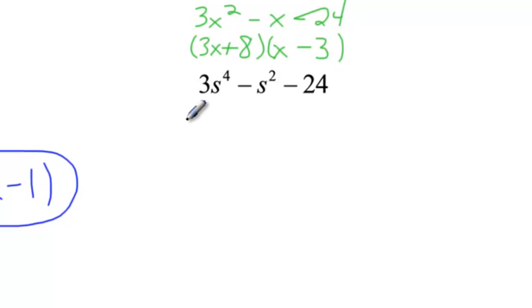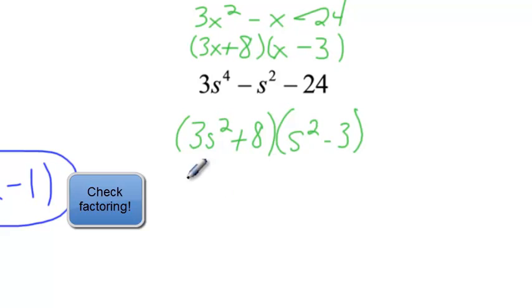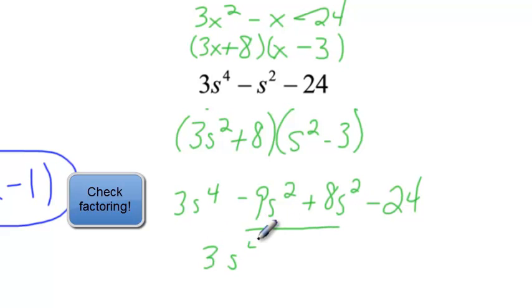And we're going to say, all right, well, that works. Well, now, instead of being 3x, we're going to make it 3s squared plus 8. And over here, we're going to make it s squared minus 3. Okay? Again, let's check. 3s squared times s squared is 3s to the fourth. 3s squared times negative 3 is negative 9s squared. 8 times s squared is 8s squared. And 8 and negative 3 is negative 24.